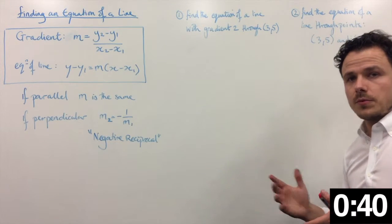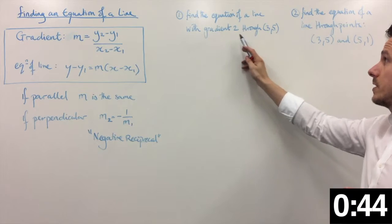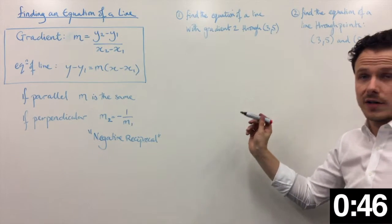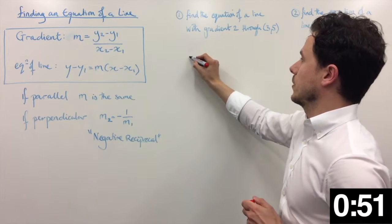Let's look at two common examples that you might get. We've got one here: find the equation of a line with gradient 2 through the point (3,5). We've already got the gradient, so we don't need to worry about this part. Let's go straight to this equation.